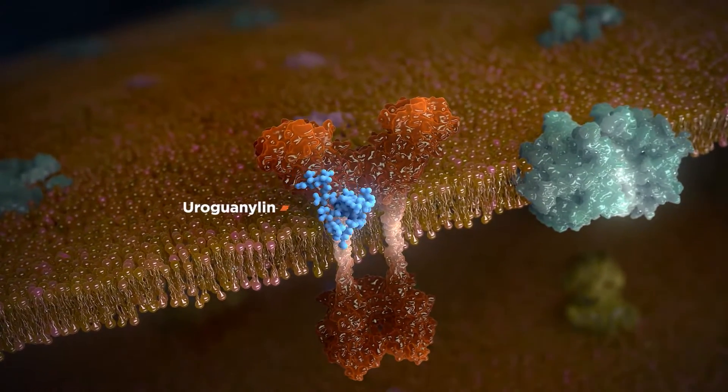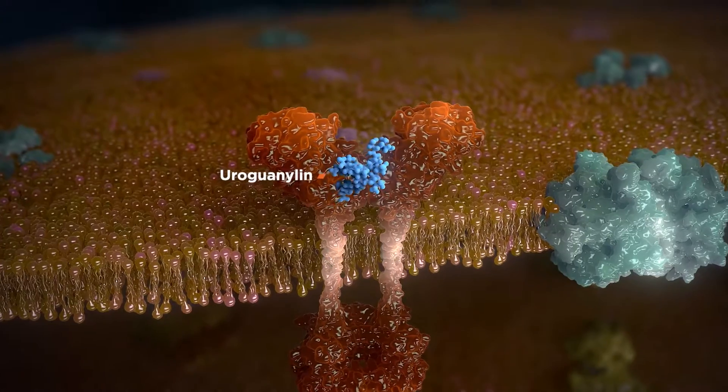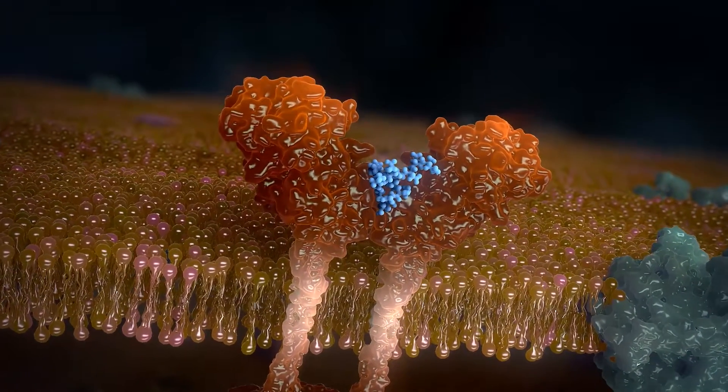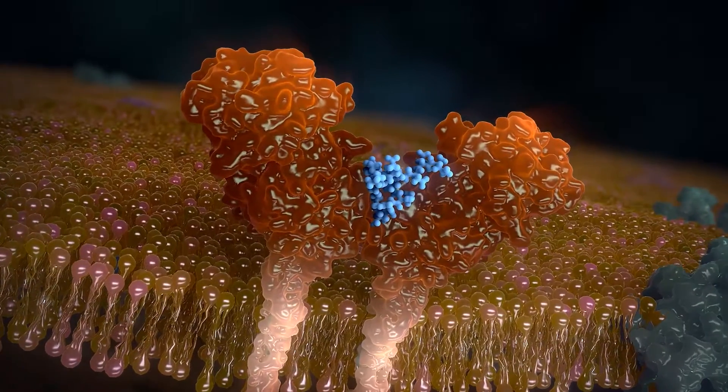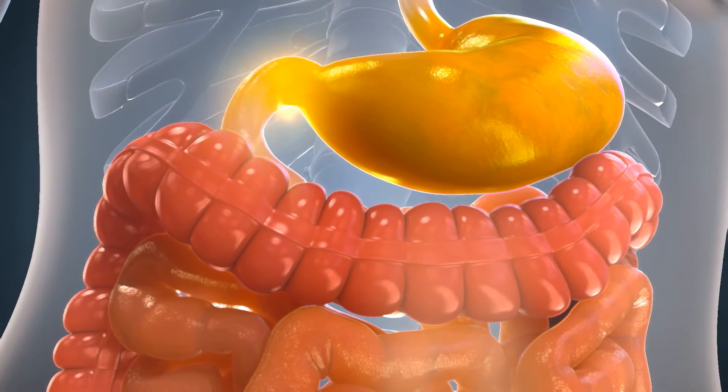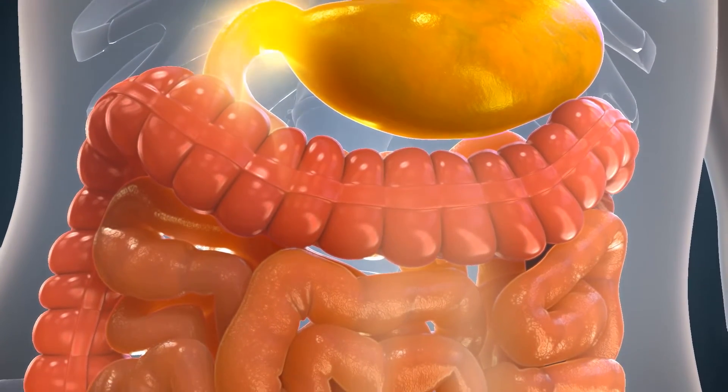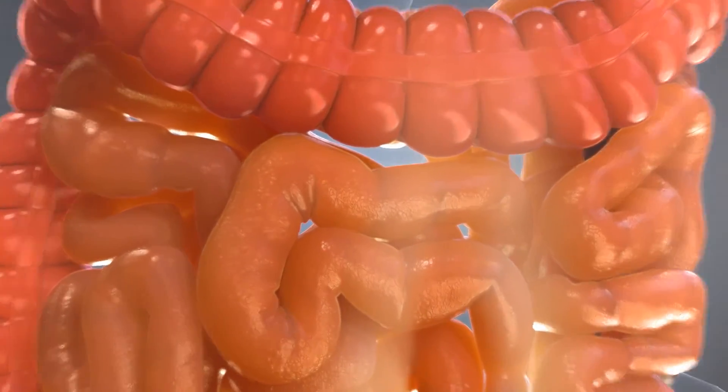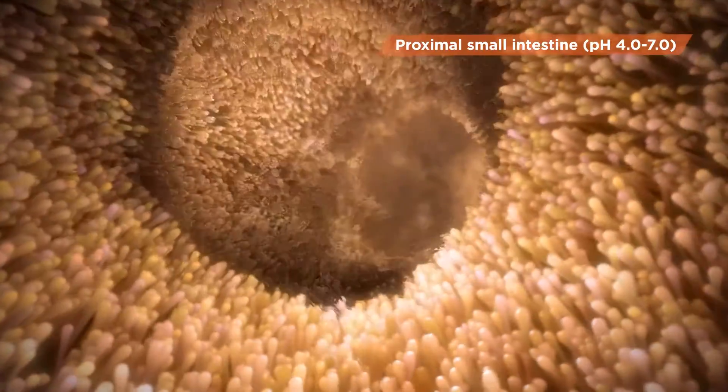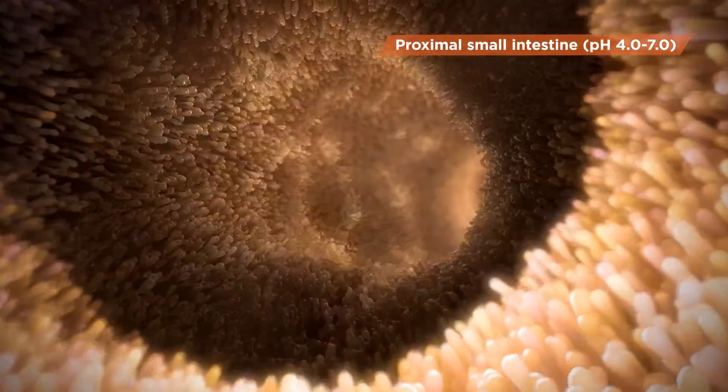Uroguanolin is a naturally occurring peptide that works by binding to GCC receptors, is pH-dependent, and more potent at slightly acidic pH levels. Therefore, its activity is primarily targeted to the proximal small intestine in a regulated manner. Uroguanolin physiologically regulates fluid balance, stool consistency, and thus, bowel function.